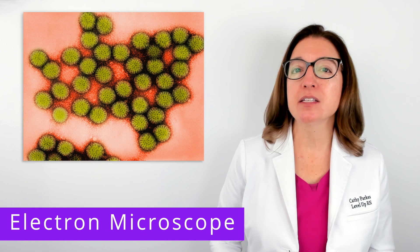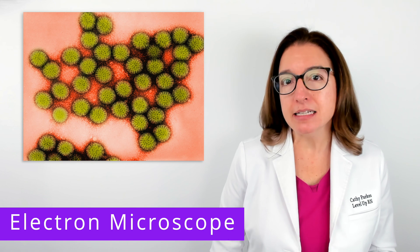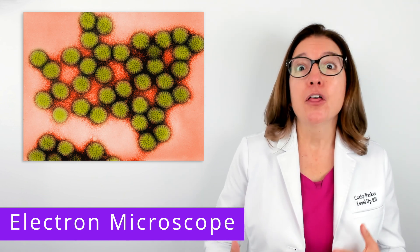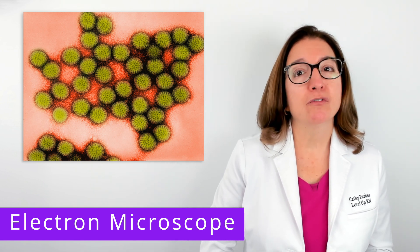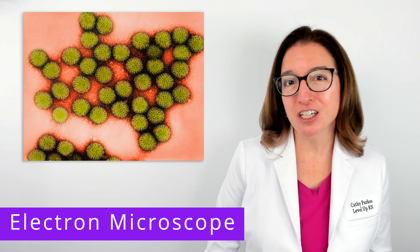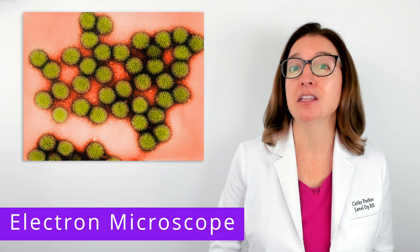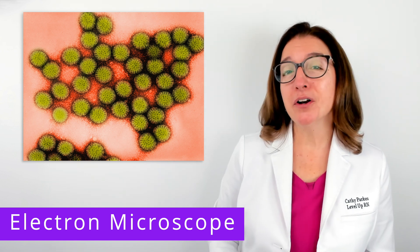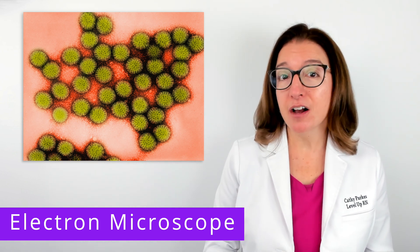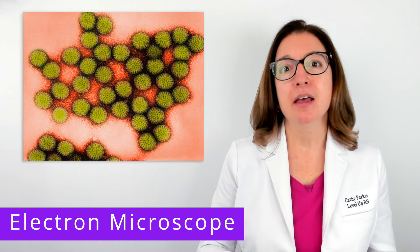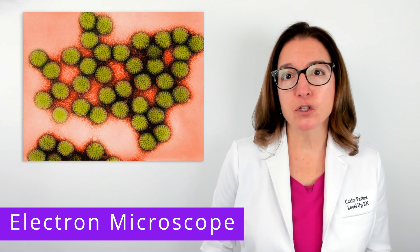An electron microscope uses short-wavelength electron beams, as opposed to light, and uses electromagnets instead of lenses. The shorter the wavelength, the higher the resolution. So this type of microscope provides very high magnification and resolution, and it can be used to observe very small structures such as viruses, including the rotaviruses in this image. It's important to note that use of this microscope requires vacuum conditions because electrons would be scattered by air molecules. Because of this, this type of microscope could not be used to observe living cells.